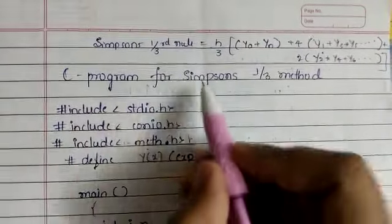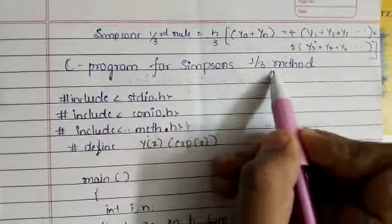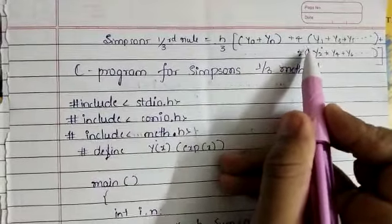Write a C program to find Simpson's method. Here is the formula for Simpson's method.